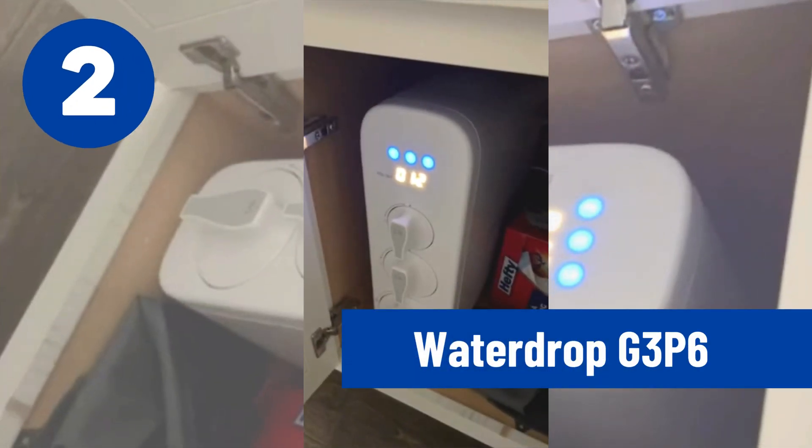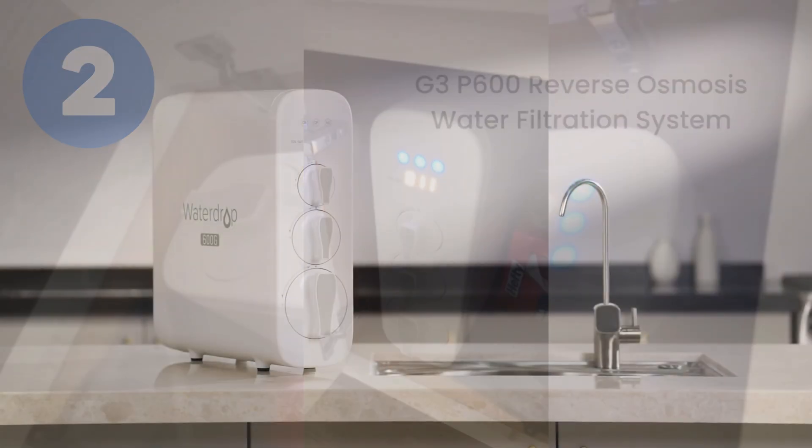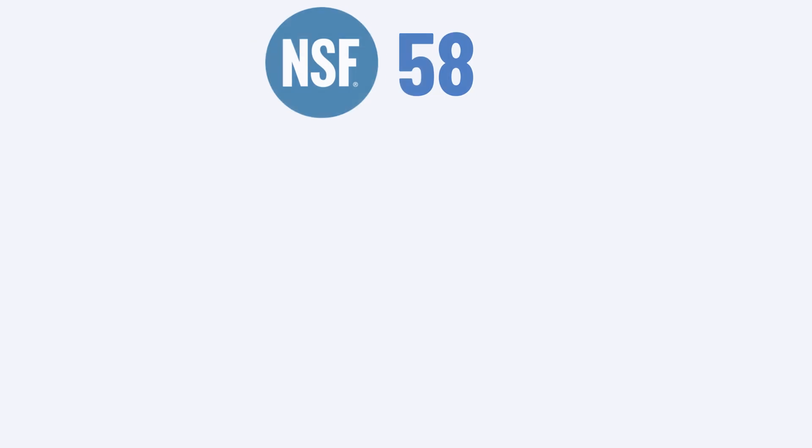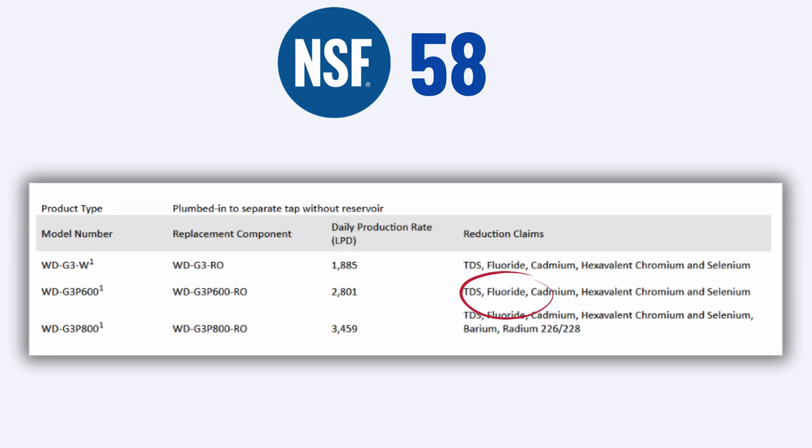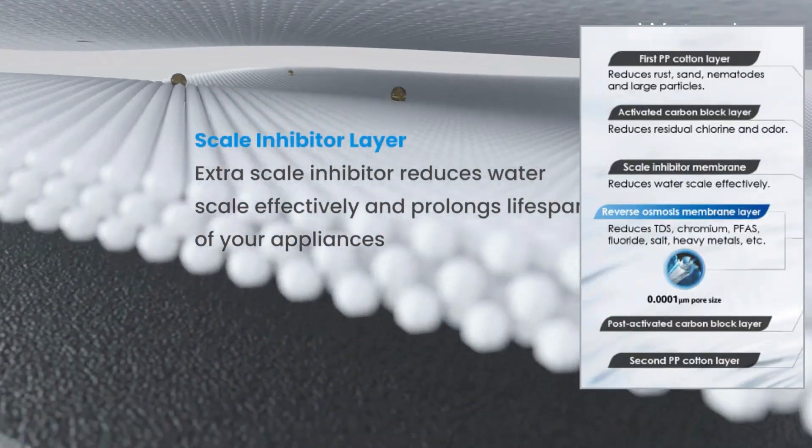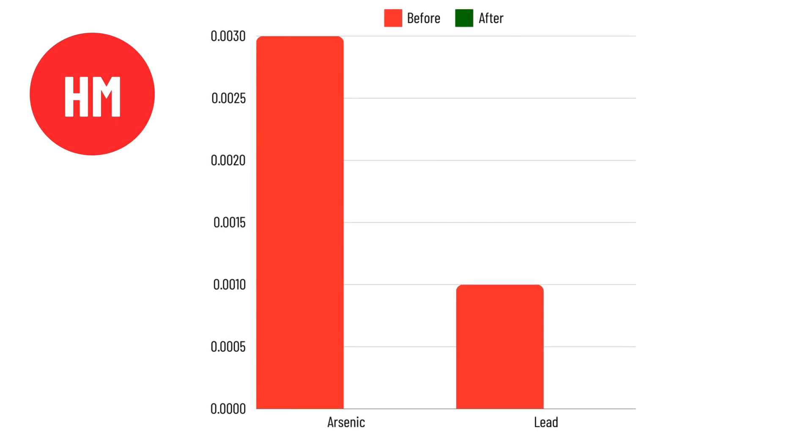Our second pick is Waterdrop G3P600. This under-sink tankless reverse osmosis unit is certified by NSF 58 to reduce fluoride, which is confirmed by independent test reports. Its multi-stage filtration involving activated carbon removes other harmful contaminants, too, like arsenic, lead, and nitrate.